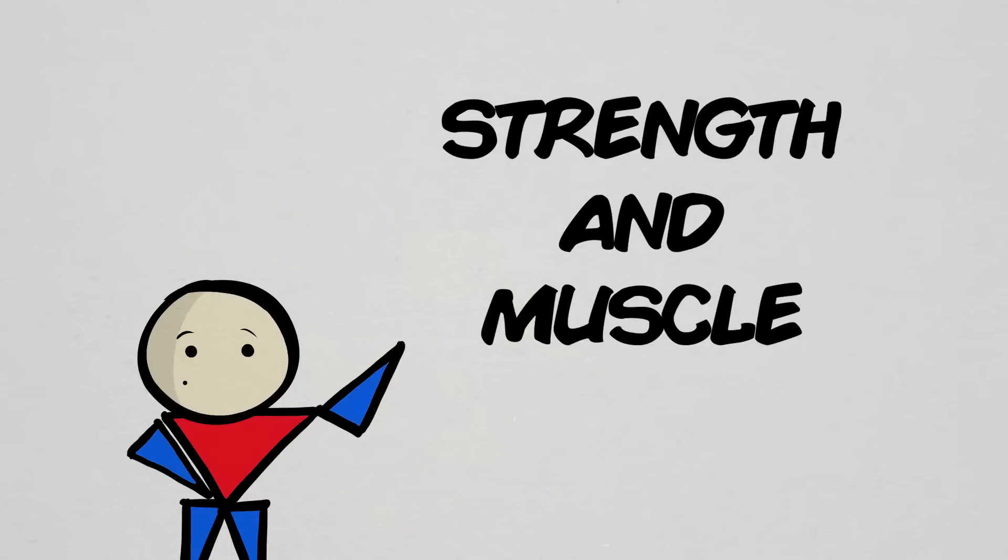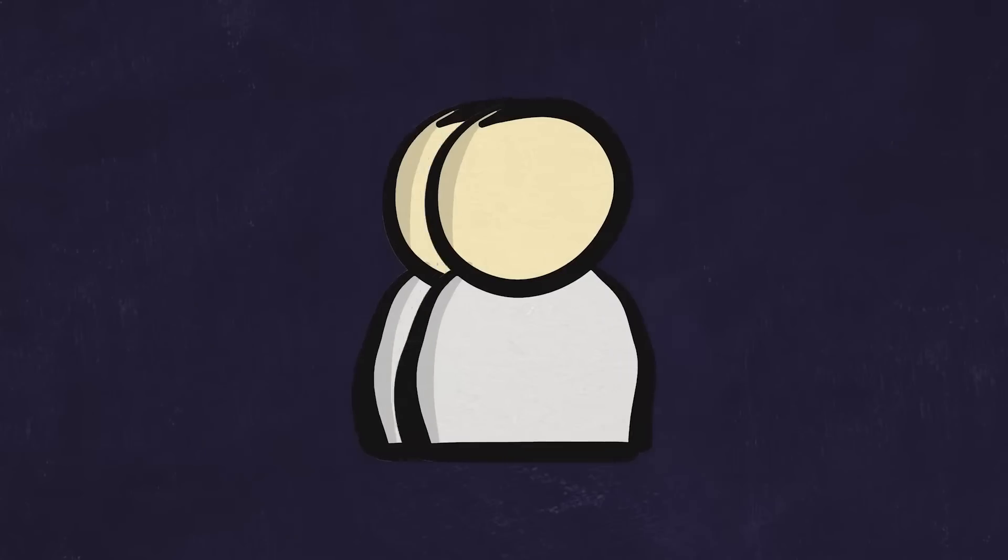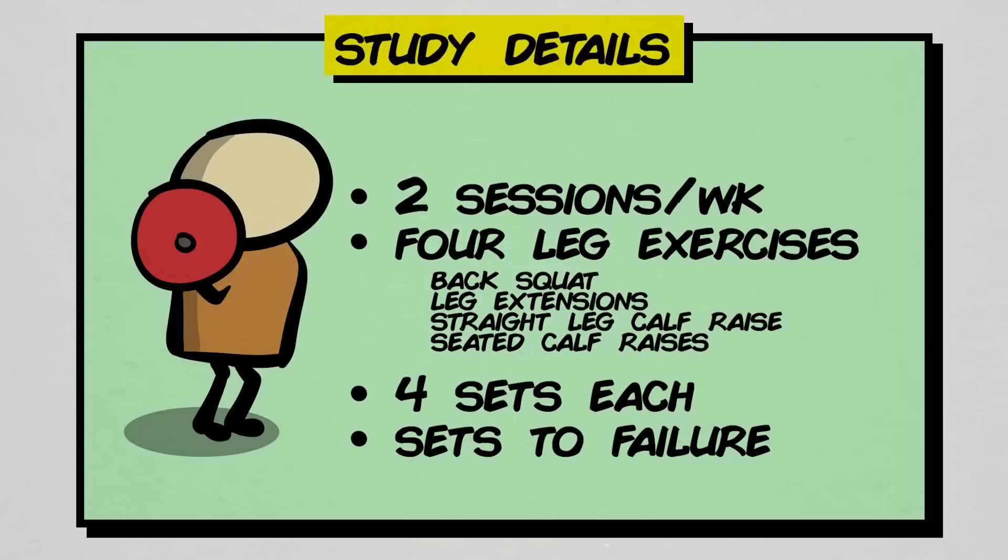For this video, we'll specifically look at the outcomes for muscle strength and muscle growth. In this eight-week study, forty-three college-age participants with at least one year of training experience were randomly assigned into either a group called reps or a group called load. The participants trained twice a week, performing four lower-body exercises for four sets each, taking each set to concentric failure.